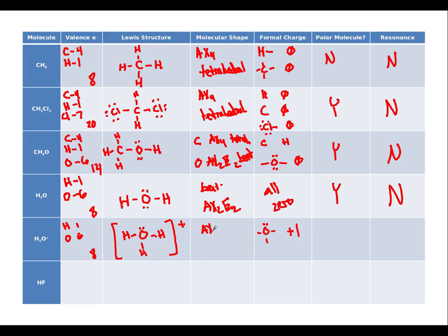Our shape is AX3E or trigonal pyramid. And all trigonal pyramids are polar. But there's no resonance here because we don't have any pi bonds or double bonds moving around.